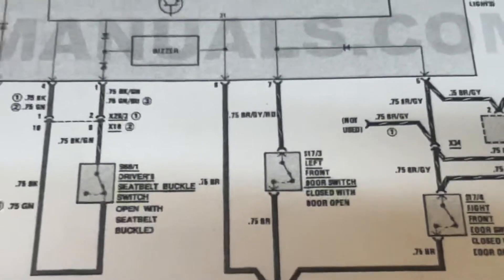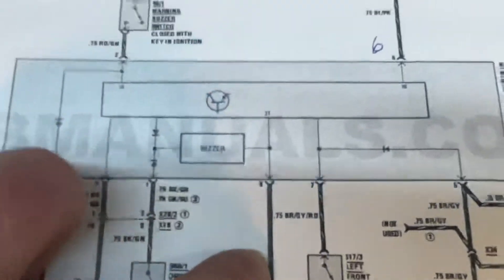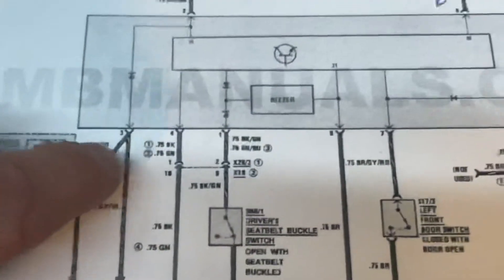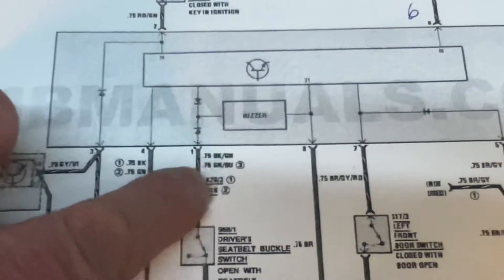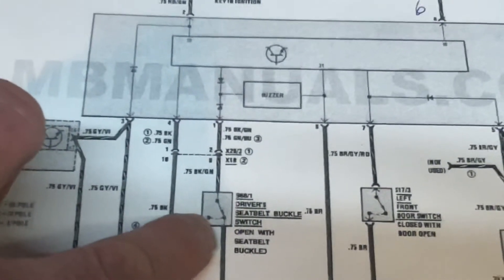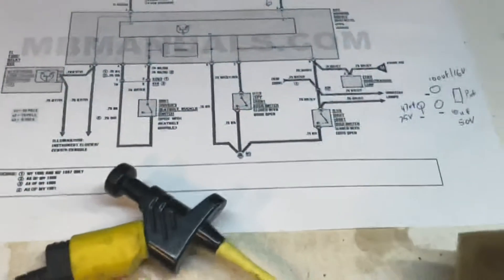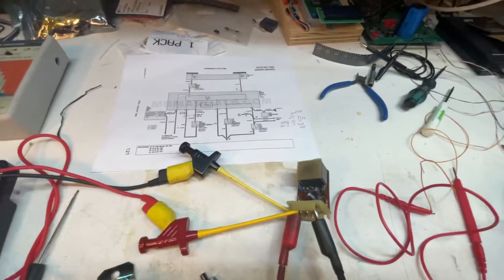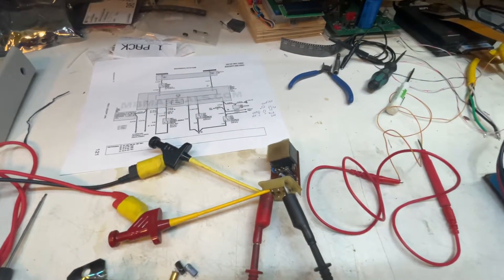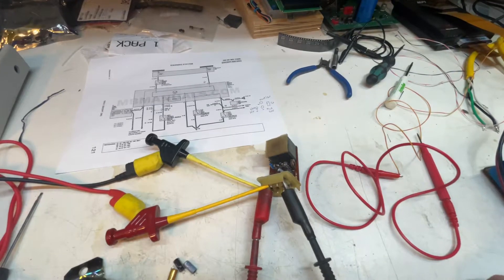It has one ground connection on eight, which is this here. And then we have on four and one, we have a normally closed switch from the seat belt. But these units were not designed to run continuously if the seat belt is not activated.